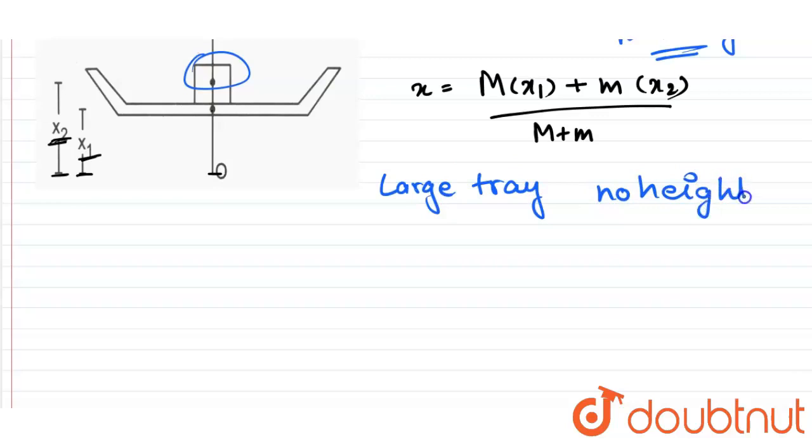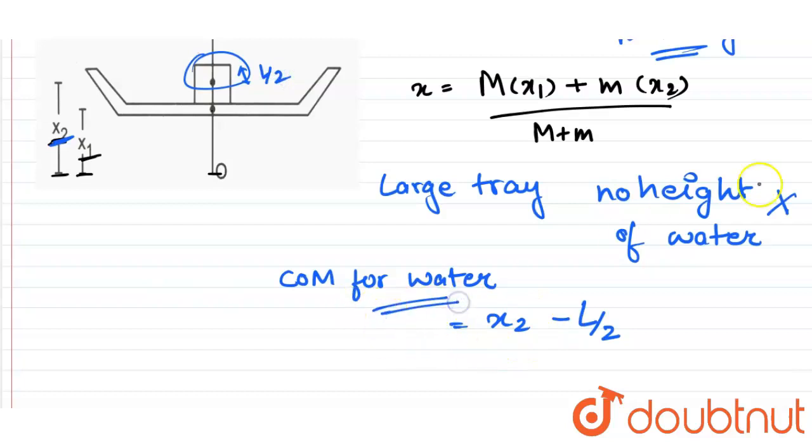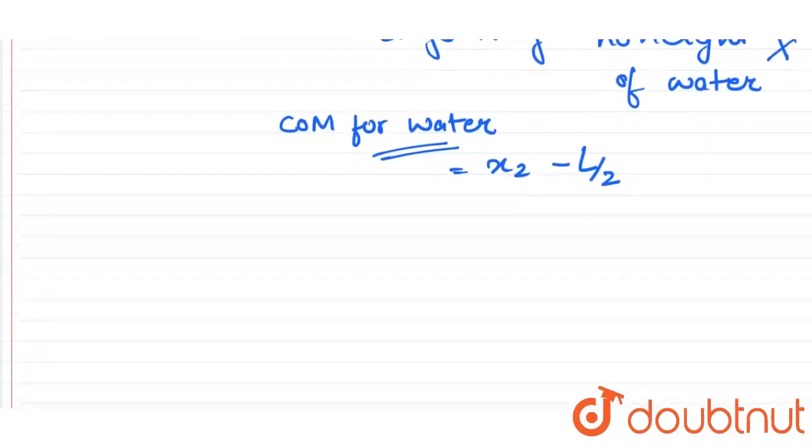So the center of mass of water comes out to be x2, that is the center of mass initially, minus L by 2. Because this is going to, this was L by 2, so this is what center of mass of water.